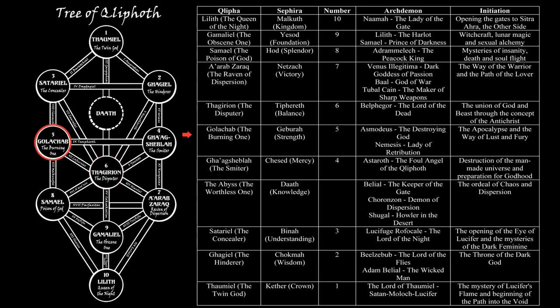The next initiation is that of Golachab, the Burning One. This Qliphah corresponds to another fiery and violent realm, that is Geburah on the Tree of Life. This Qliphah is ruled by Asmodeus, the destroying god, whose female counterpart within this realm is Nemesis, the Lady of Retribution. The initiation of the Burning One is that of the Apocalypse and the way of lust and fury.